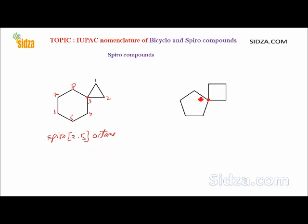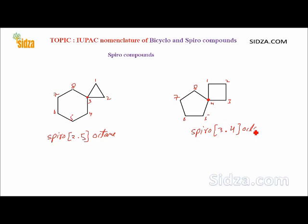In this next molecule, we again identify the spirocarbon and start numbering from the smaller cyclic ring: one, two, three, four, five, six, seven, eight. There are three carbon atoms other than the spirocarbon in the smaller ring, and four in the larger ring — so spiro[3.4]. The total number of carbon atoms is eight: spiro[3.4]octane.